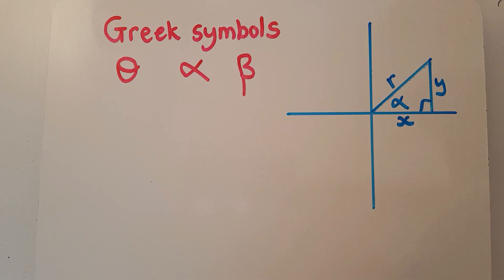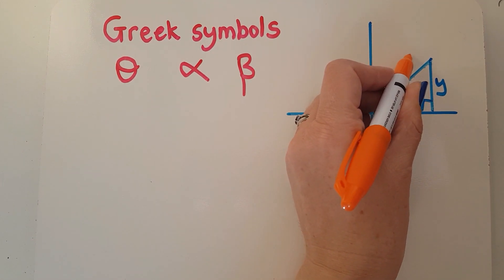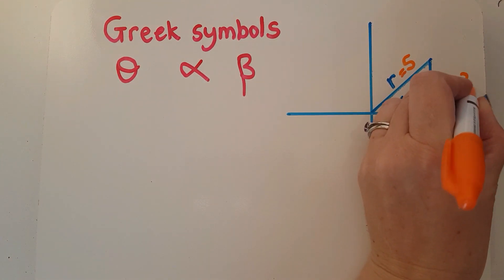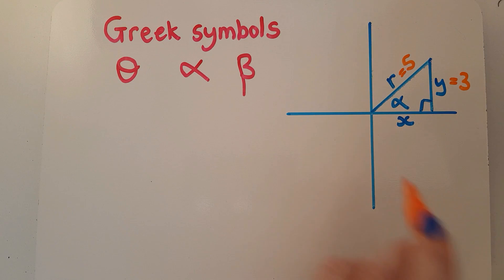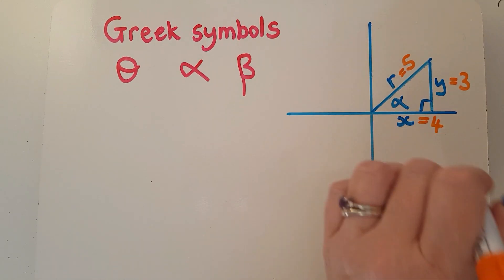So for example, if I told you that r was 5, and if I said y was 3, using Pythagoras you'd be able to work out x. You might recognize this as a Pythagorean triplet of 3, 4, 5.